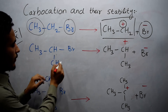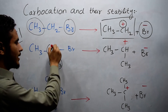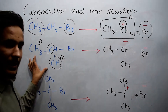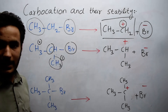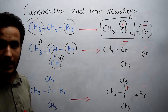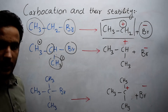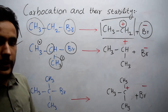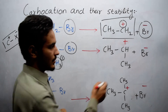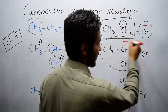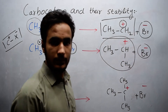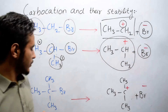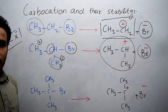Secondary alkyl halide is CH₃–CH–CH₃ where the central carbon is bonded to two alkyl groups, making it a secondary carbon. Bromine is attached to this secondary carbon, so it is a secondary alkyl halide. On supplying energy, it gives us a secondary carbocation plus Br⁻.